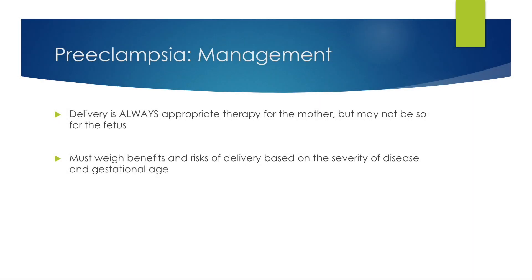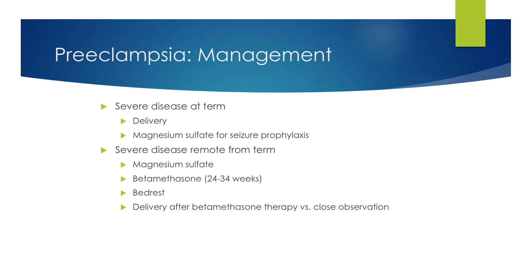The management of preeclampsia overall is delivery of the baby and the placenta. Delivery is always appropriate therapy for the mother, but may not be so for the fetus, especially if the baby is preterm. It is important to weigh the benefits and risks of delivery based on the severity of preeclampsia and gestational age. For severe disease at term, the mother is induced for delivery and given magnesium sulfate for seizure prophylaxis. For severe disease remote from term, the patient is given magnesium sulfate and betamethasone steroids to help mature the baby's lungs and other organs, placed on bed rest, and observed in the hospital.